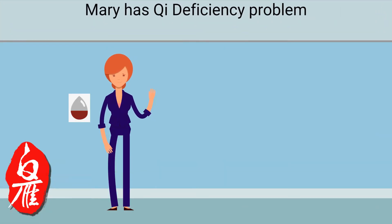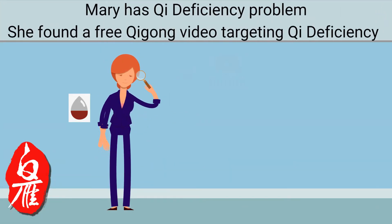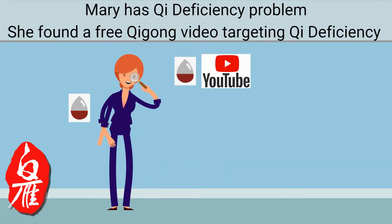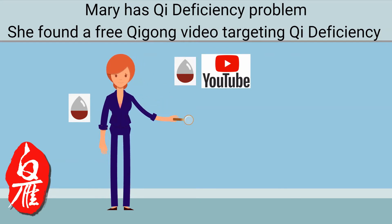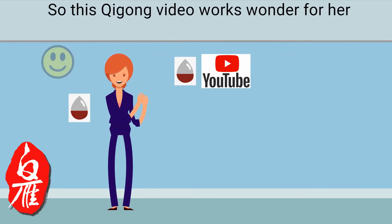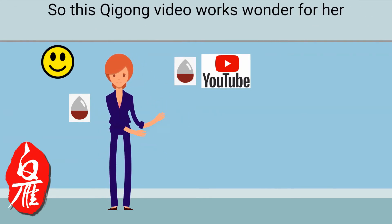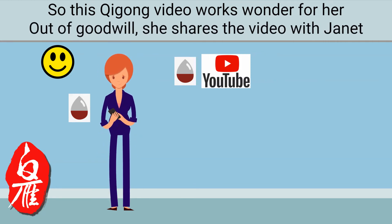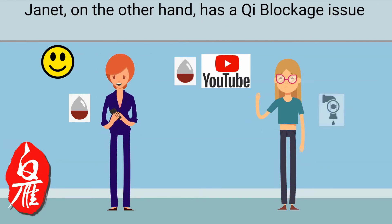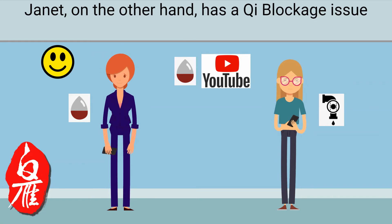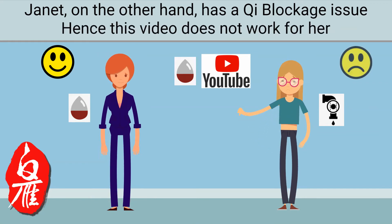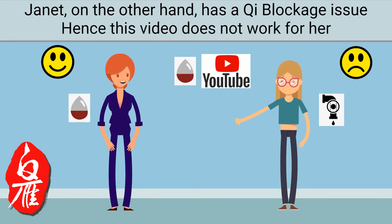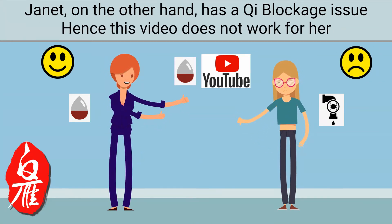Mary has a Qi deficiency problem. She found a free Qi Gong video targeting Qi deficiency, and it works wonders for her. Out of goodwill, she shares the video with Janet. Janet, on the other hand, has a Qi blockage issue. Hence this video does not work for her.